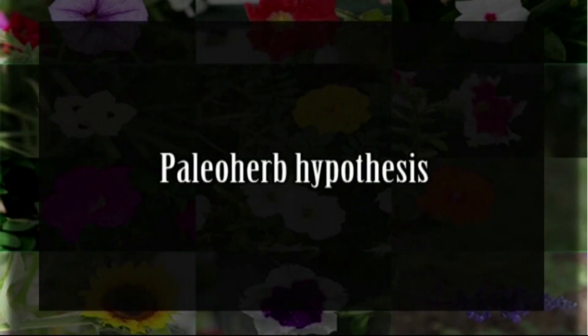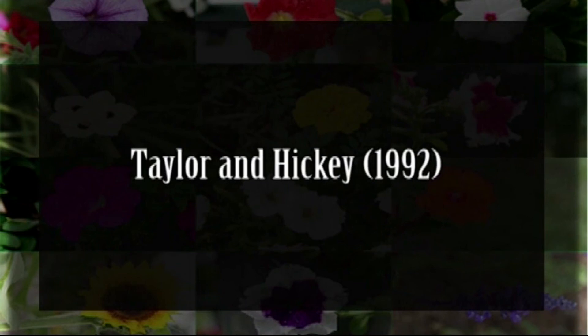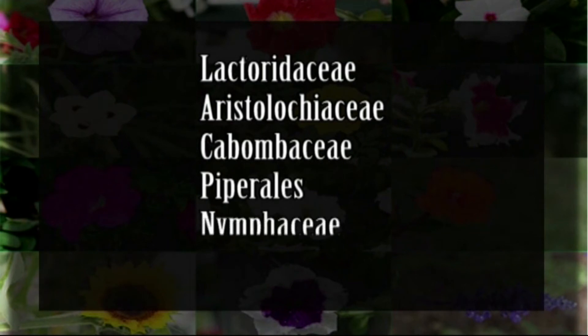Another theory is the Paleoherb Theory or Paleoherb Hypothesis. According to Taylor and Hickey in 1992, flowering plants evolved from herbaceous forms possessing ovules and pollen-bearing organs that combined over time producing modern flowers. The term 'paleoherb' was first used by Donoghue and Doyle in 1989 for a group of derivatives of magnoloids having anisocytic stomata, two whorls of perianths, and trimerous flowers, including Lactoridaceae, Aristolochiaceae, Cabombaceae, Piperales, Nymphaeaceae, and monocots.